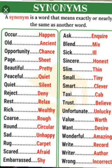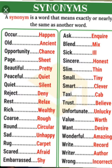Next is wonderful — W-O-N-D-E-R-F-U-L — the synonym for wonderful is amazing, A-M-A-Z-I-N-G. Write — W-R-I-T-E — you can also write record, R-E-C-O-R-D; record and write are synonym words. Writer — W-R-I-T-E-R — its synonym is author, A-U-T-H-O-R. Wrong — W-R-O-N-G — means incorrect, I-N-C-O-R-R-E-C-T; incorrect means wrong. So these are the synonym words.